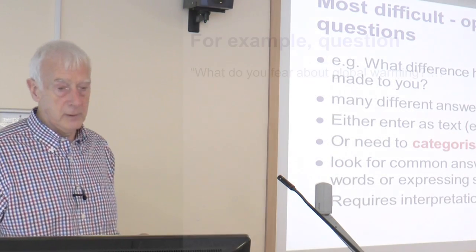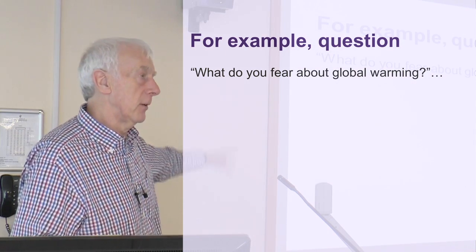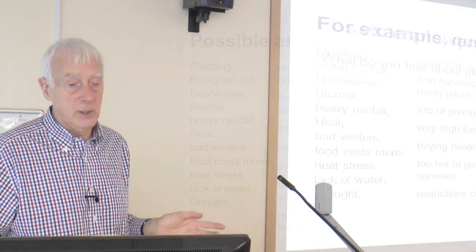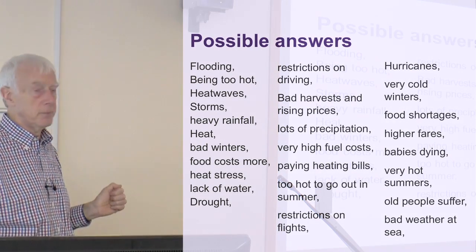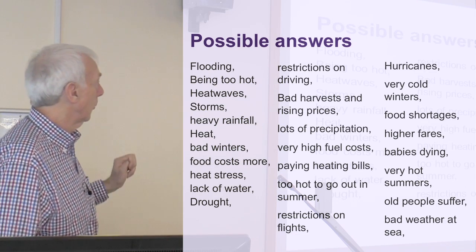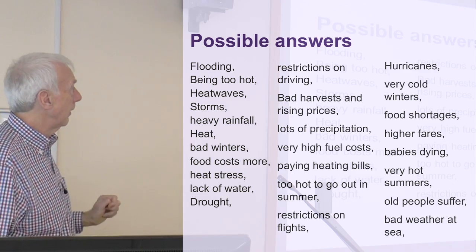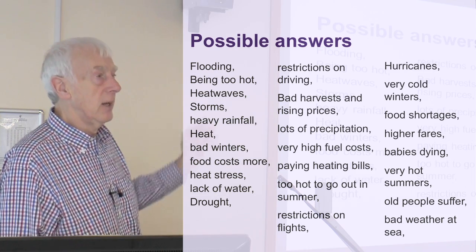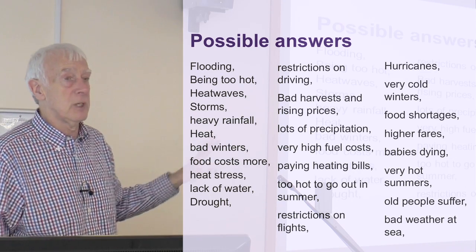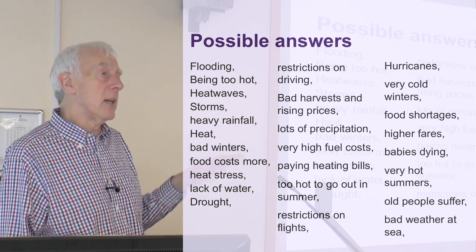Let me give you an example. Here's the question: 'What do you fear about global warming?' with a big gap underneath to encourage people to write lots. The answers I've given you are fairly short. Somebody wrote 'flooding,' somebody said 'being too hot,' somebody else said 'heat waves,' somebody else said 'storms,' 'heavy rainfall,' 'restrictions on driving,' 'lots of precipitation,' 'very high fuel costs,' and so on — a whole range of answers. In a large survey with 100 respondents, you'd get almost 100 different responses, with some similar things written in slightly different ways.